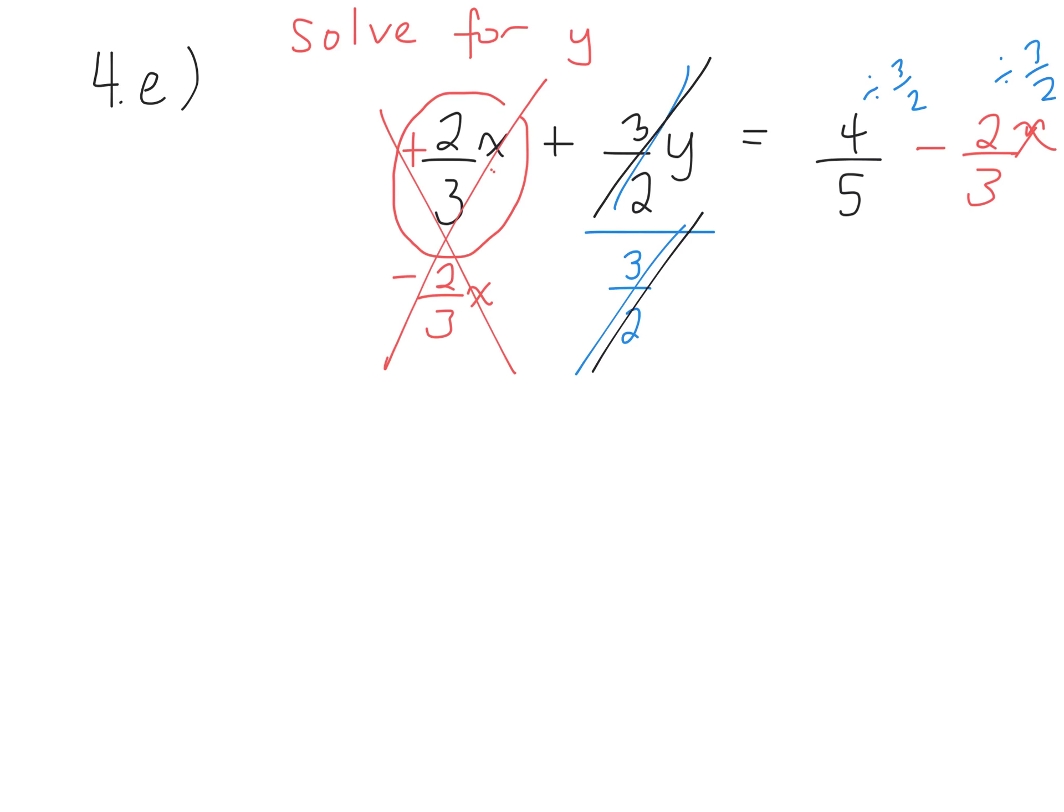And we've eliminated that, so we have y equals. And again, you can do it off to the side if you want. We're doing this part first. 4 over 5 divided by 3 over 2. So you do that part on your own.